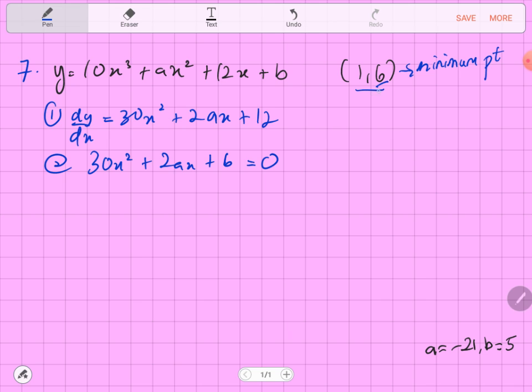If this point is the minimum point, means that the x-coordinate will satisfy this equation. We can substitute this x into the equation. It should get equal to 0 because this is the minimum point.